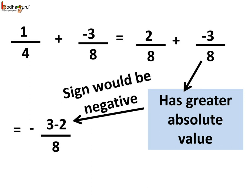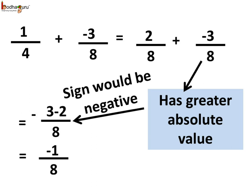The absolute values of 2/8 and minus 3/8 are 2/8 and 3/8 respectively. Here, 3/8 is greater, so the sum would be negative. 3 minus 2 is equal to 1, and we put the sign of the number with greater absolute value, which is minus 3/8. So we put a negative sign. Thus, 1/4 plus minus 3/8 is equal to minus 1/8. Or, we can say 1/4 minus 3/8 is equal to minus 1/8.